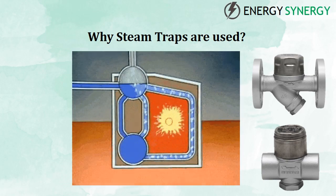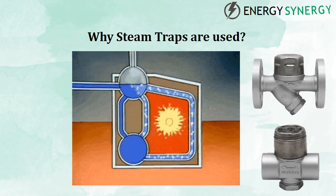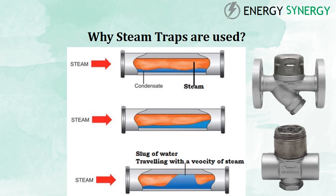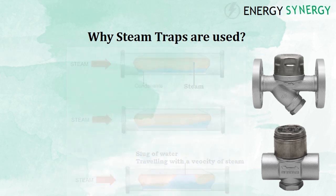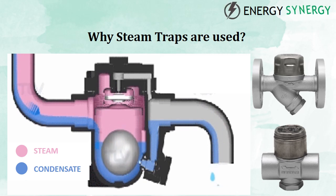Steam generated by a boiler contains heat energy which is used to heat the product. When steam loses its energy by heating the product, condensate is formed. Also, a part of the energy contained by steam is lost through radiation losses from pipes and fittings. After losing this heat, steam gets converted into condensate. If this condensate is not drained immediately as soon as it forms, it can reduce the operating efficiency of the system by slowing the heat transfer to the process. Presence of condensate in a steam system can also cause physical damage due to water hammer.